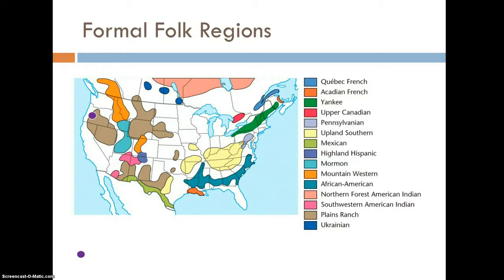When you're in the core — looking at this brown area in Oregon, Nevada, and California — that is called the Plains Ranch folk culture. If I were in the center of this area, I would see the majority of people living that folk culture way, and as I move away, I'd see fewer and fewer. There's also a purple dot showing the location of a folk culture in Oregon called the Old Believers, in Woodburn, Oregon. You can see there are large and small folk culture regions within the United States.